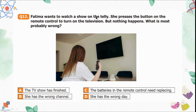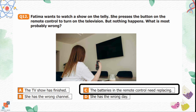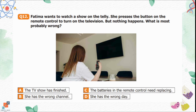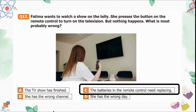Question number 12: Satima wants to watch a show on the TV. She presses the button on the remote control to turn on the television, but nothing happens. What is most probably wrong? Option A is the TV show has finished. Option B is she has the wrong channel. Since the television is not turning on at all, options A and B are incorrect. Option C is the batteries in the remote control need replacing — this is the correct option, because if the batteries are not working, the TV will not turn on. Option D is she has the wrong day, which is also incorrect.